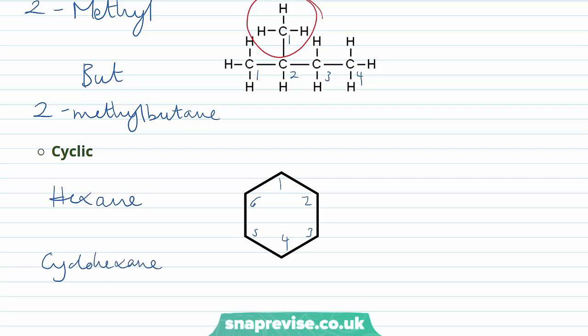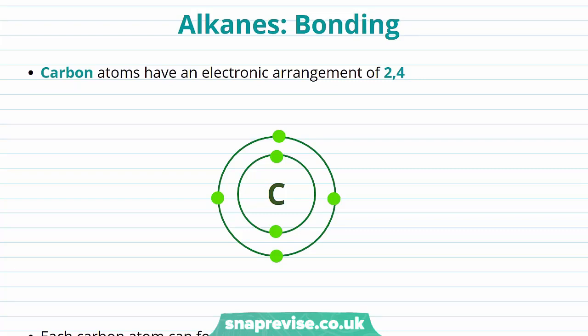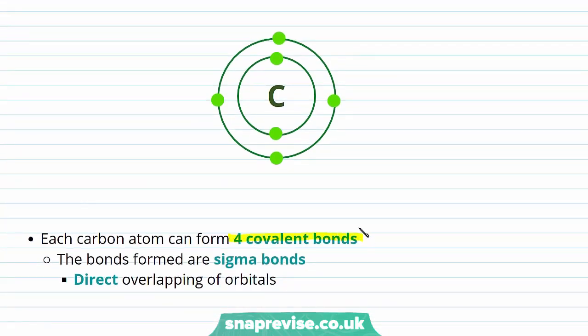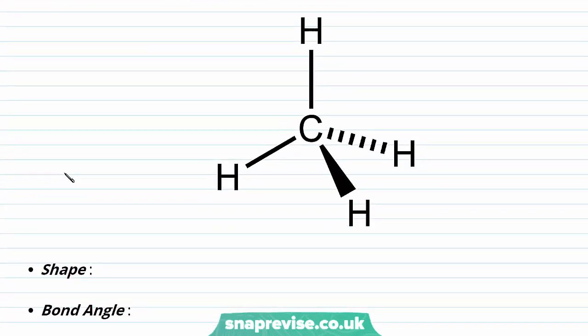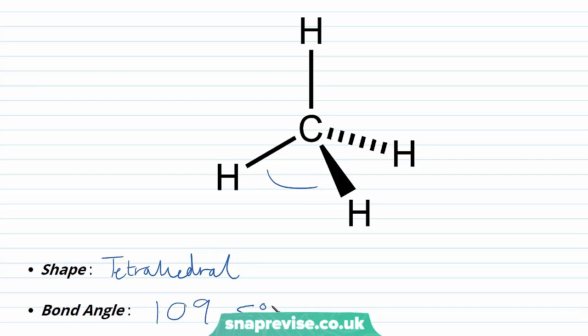Now I've had a look at what are alkanes, let's take a closer look at the bonding within the alkanes. We know that our alkanes are hydrocarbons — they are made of carbon and hydrogen atoms only. Now our carbon atoms have an electronic arrangement of 2, 4: two electrons in the innermost shell and four in the outermost shell. As our carbon atoms have four electrons in the outermost shell, they form four covalent bonds. The bonds they form are sigma bonds because they involve the direct overlapping of orbitals. Using methane, the most simple alkane, every carbon atom has a tetrahedral shape, and we know the bond angle to be 109.5 degrees, because of the electron repulsion that occurs.